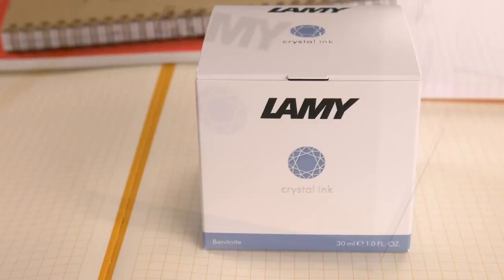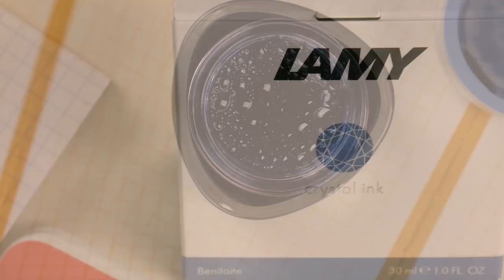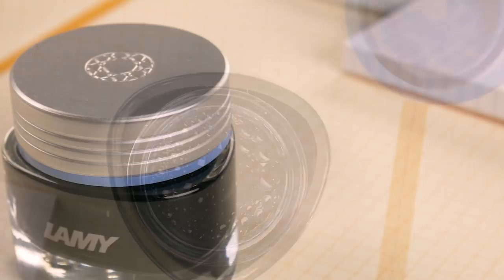Hi guys, Steph here, and today we're going to be taking a look at Lamy Beneteauite. This is another one of the inks from Lamy's new Crystal Ink series, so it's going to come in a 30 milliliter bottle, sort of a rounded triangle shape with a cool jewel imprint on top, and it's got a nice wide lip, so it's super practical for filling pens from.